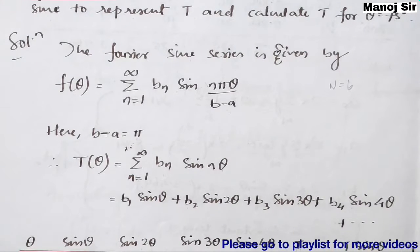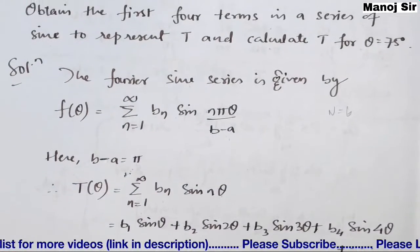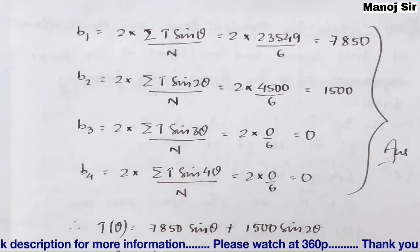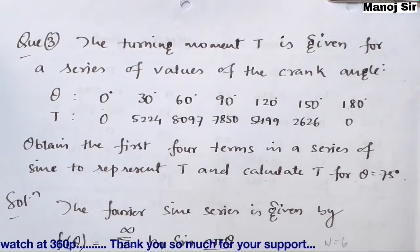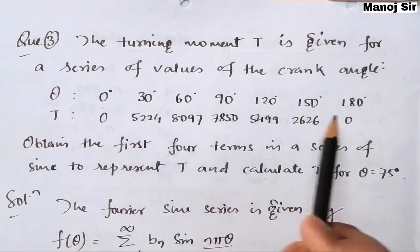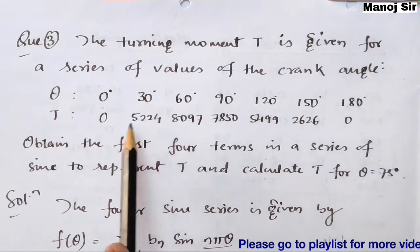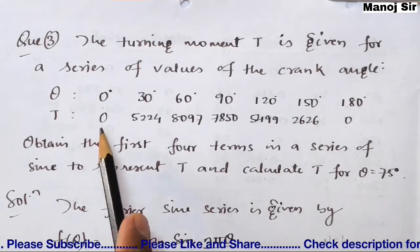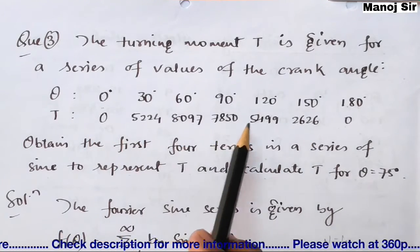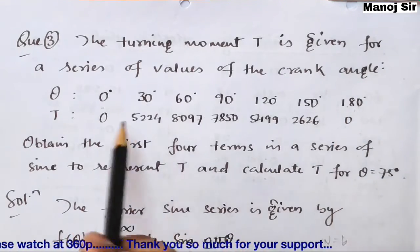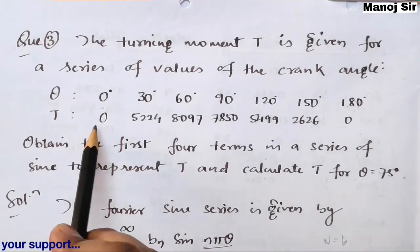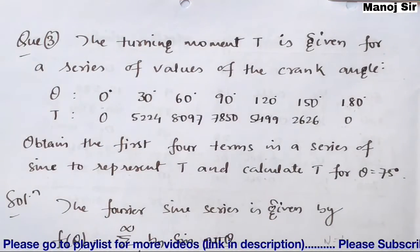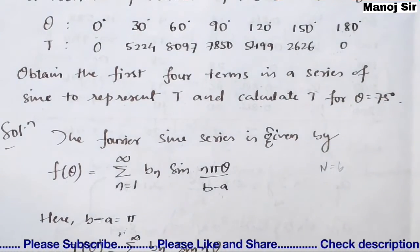Now we will form a table, but first we need to know the value of capital N, because when finding b1, b2, b3, b4 we need this value. In the problem, at theta equals 0 degrees T equals 0, and at theta equals 180 degrees T is again 0, meaning from 180 degrees onwards the values repeat. So we count: 1, 2, 3, 4, 5, 6 — capital N equals 6.